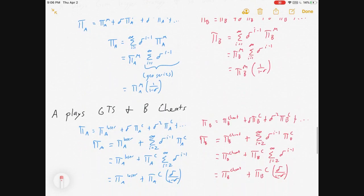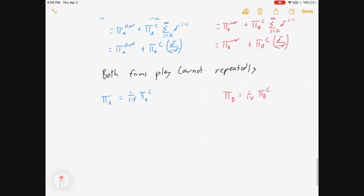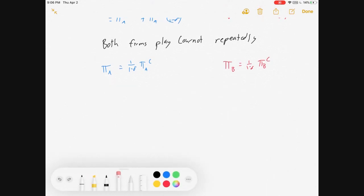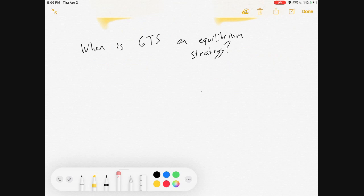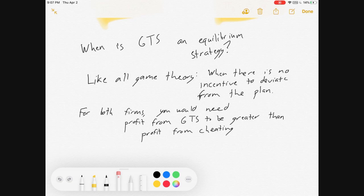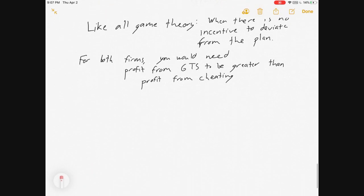Okay, so we've gone through a lot of math. This is all kind of just preliminaries to what we wanted to get to. So, hopefully you can pause and work through it if you want to. But what's coming next? When is grim trigger strategy an equilibrium strategy? Like all game theory, there's one main way you know if something's an equilibrium strategy. And that is when there is no incentive to deviate. Meaning, my strategy is the best thing I can be doing. So, no incentive to deviate from the plan. So, for both firms, you would need the profit from their grim trigger strategy to be greater than the profit from cheating.